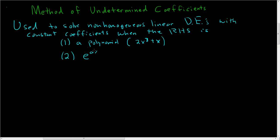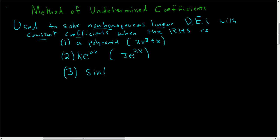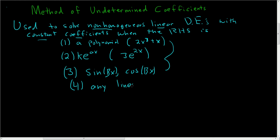Two, k·e^(ax), where a is a number and k is a constant. An example would be 3e^(2x). So if 3e^(2x) is on the right-hand side and it matches the form — non-homogeneous linear with constant coefficients — then you can use this method. Three, trig functions like sine(βx) and cosine(βx). And more importantly, any linear combination of these three types.